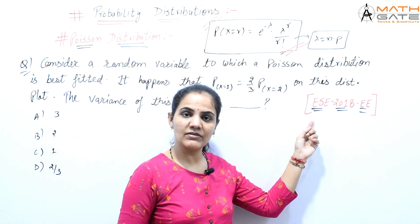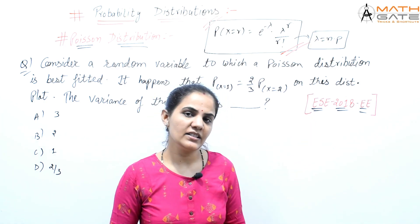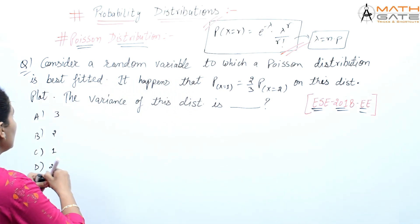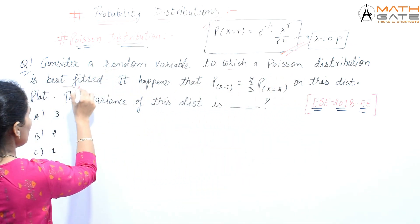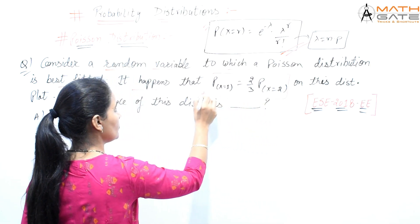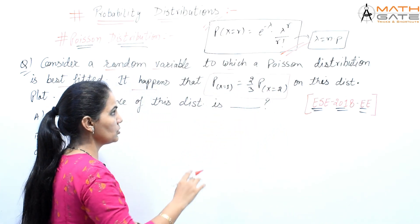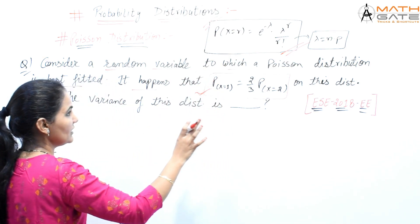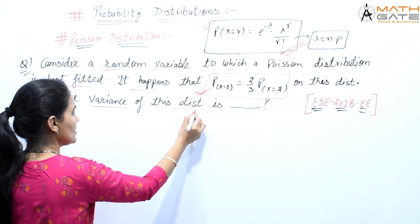This next question has been asked in Engineering Service Exam 2018, Electrical branch, and it's a very simple question. Consider a random variable to which a Poisson distribution is best fitted. It is given that probability at x equals 1 is equal to 2 by 3 times probability at x equals 2. We need to find the variance of this distribution.